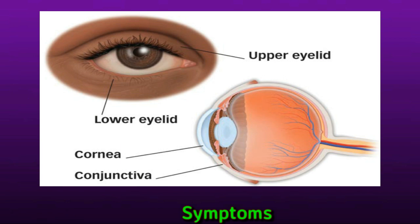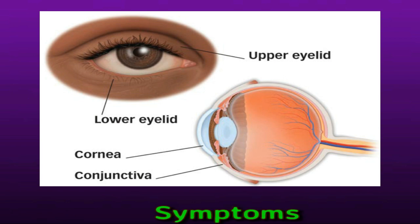Sometimes a person may also experience herpes sores on top of the eyelids. This may resemble a rash with blisters. The blisters will form crusts that usually heal within 3 to 7 days. If the herpes virus affects the cornea, the inside of the eye, or the retina, a person may find that their vision becomes reduced. Typically, eye herpes does not cause a lot of pain, even though a person's eye may look painful.